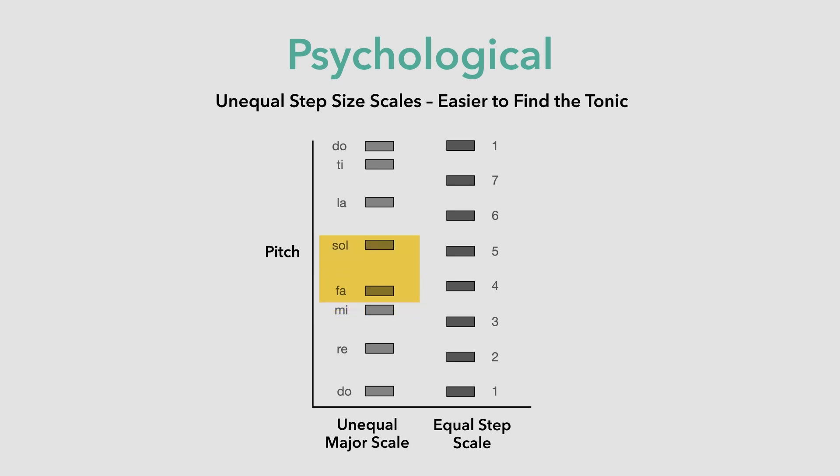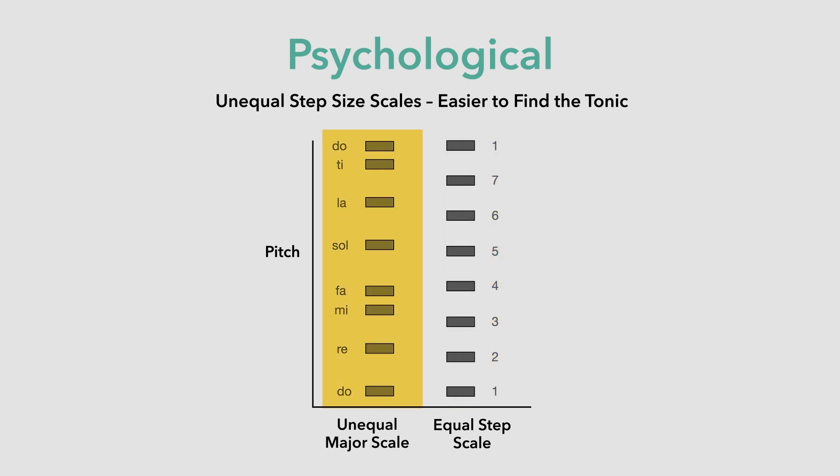If the distance between all tones were the same — equal step sizes — studies with infants have shown that it becomes harder to know where you are in the scale. When infants were taught a brand new scale with unequal step sizes, their memory performance was very good. In fact, they learned it as easily as the culturally familiar western tonal scale. Both infants and adults failed at learning a new scale with equal step sizes.